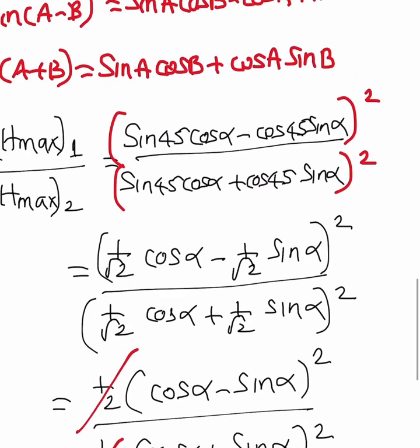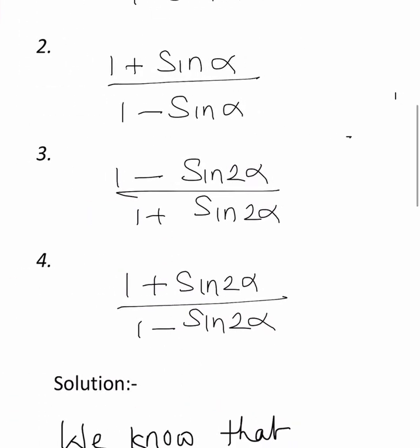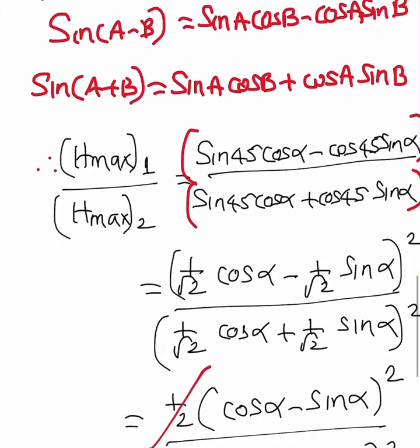This is nothing but option 3 in this given question: 1 minus sin 2 alpha divided by 1 plus sin 2 alpha.